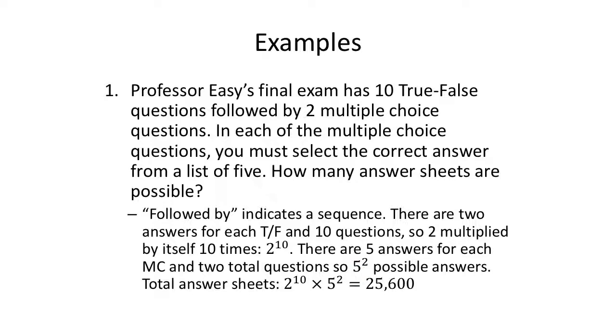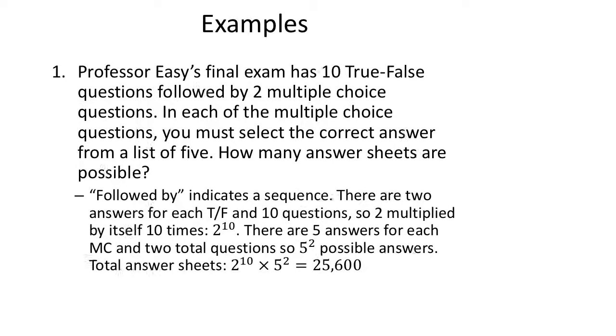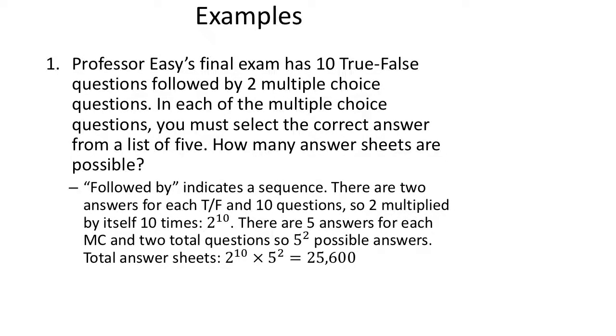Total answer sheets will be 2 to the 10th times five squared. And I am absolutely going to pull out a calculator to do that calculation. We get 25,600 possible outcomes just from a 12 question final exam. All right? That's why you study. That's not likely if you're just randomly marking choices.